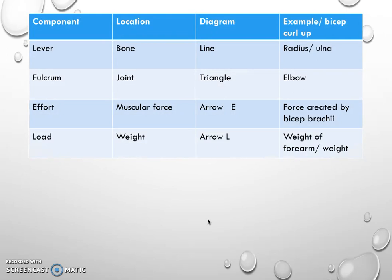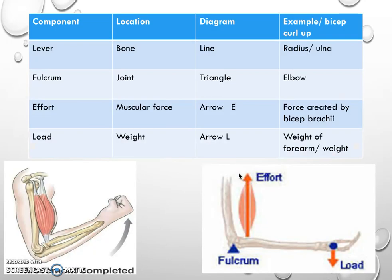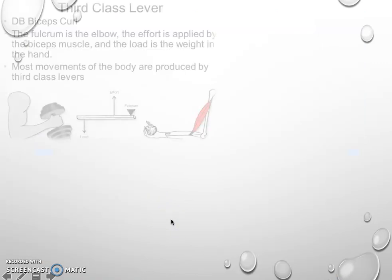Here's how we can easily break this down into a table. We've got the levers, the location is the bone. For the diagram we draw a line, then for the fulcrum the joint and we draw a triangle. The effort is muscular force, so we have an arrow with an E. Load is weight and that's an arrow with an L. If we're asked to draw a diagram, and that happens a lot in our biomechanics exams, we must use those particular descriptions. You can see in this one down at the bottom here, it's got the triangle, the arrow and the E, and the arrow and the L. Notice the direction that they're going in is very important as well.